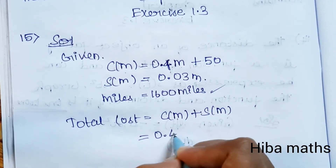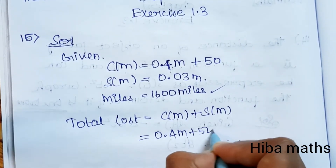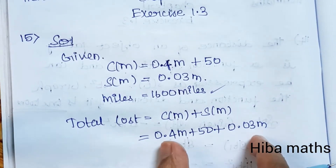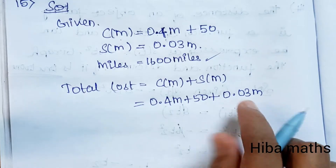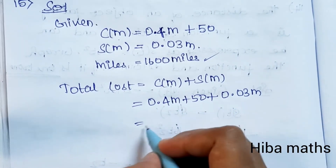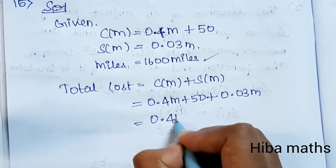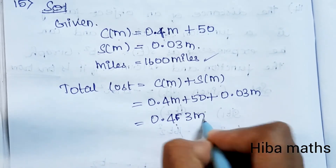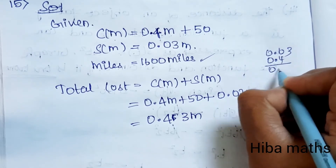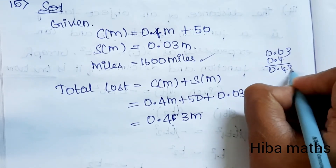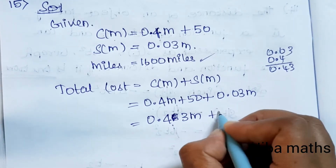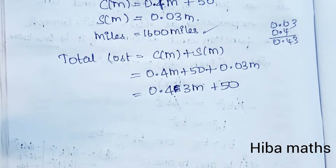C of M is 0.4M plus 50 and S of M is 0.03M. Adding these two together, 0.4M plus 0.03M gives 0.43M, so the total cost function is 0.43M plus 50.